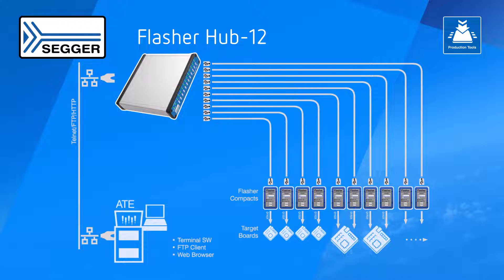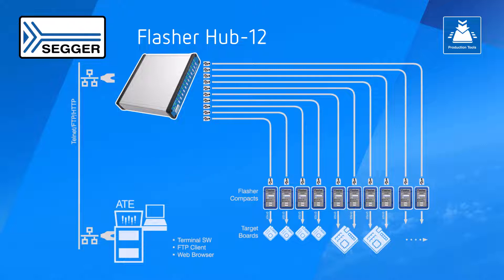The Flasher Hub 12 also supports the programming of unique serial numbers and patch data. All this makes the Flasher Hub 12 a perfect fit for small-scale as well as large-scale production environments.